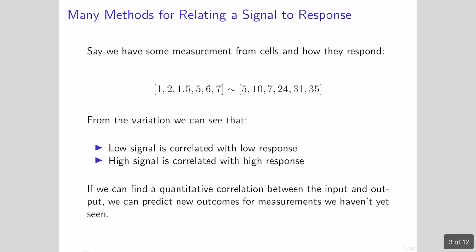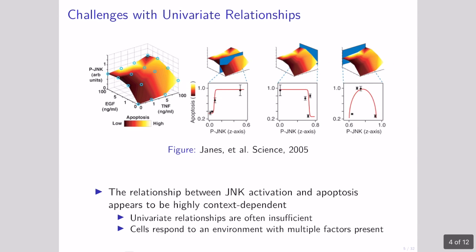If we wanted to predict how some cells responded based on a measurement that we make, that problem isn't difficult — that's something we've already seen. If we had some input measurements, maybe we call this X, and we had some output measurement of cell response, we could use something like ordinary least squares regression or some sort of nonlinear regression. But one of the challenges with biological systems is that we often need to take into account multiple different inputs to be able to make some sort of prediction.